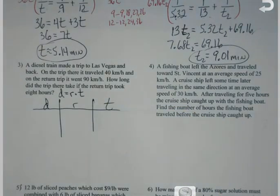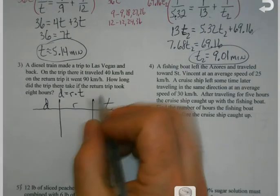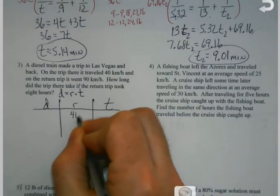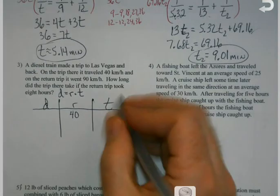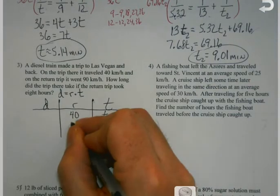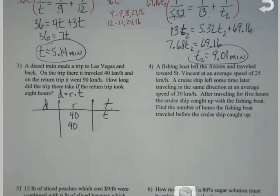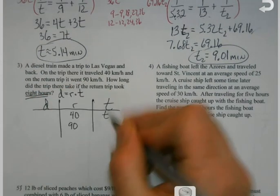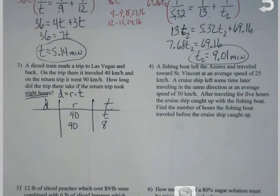So I look and I go, okay, I'm going to make a chart. Here's my distance, here's my rate, here's my time. So what do I know? Well, let's see here. I know that on the way there, I went 40, and I don't know how long it took me to get there, at least not yet. Then I also know that on the way back, I was going 90, but I do know how long I was going on the way back. It took me 8 hours.